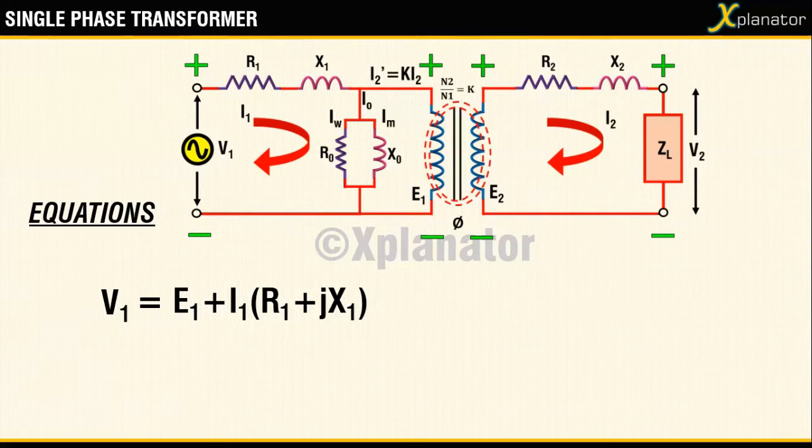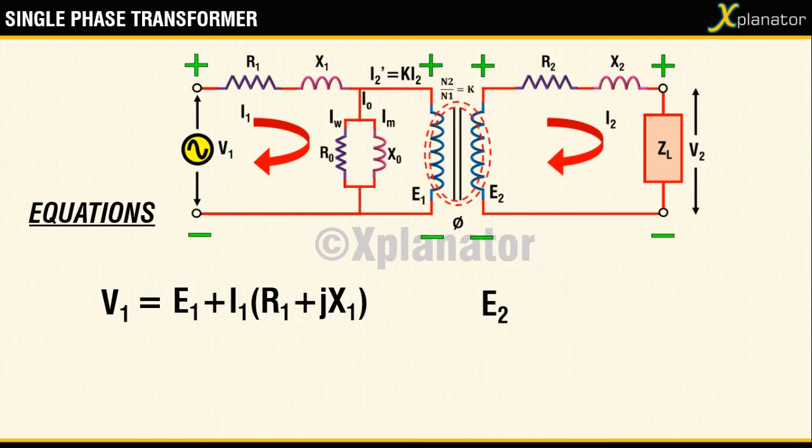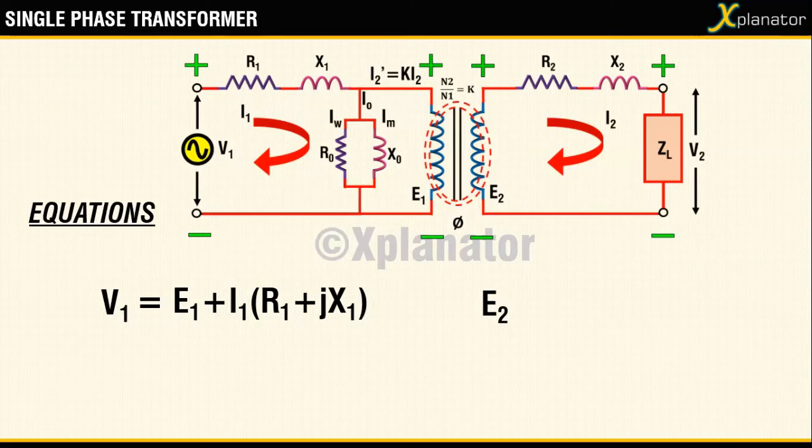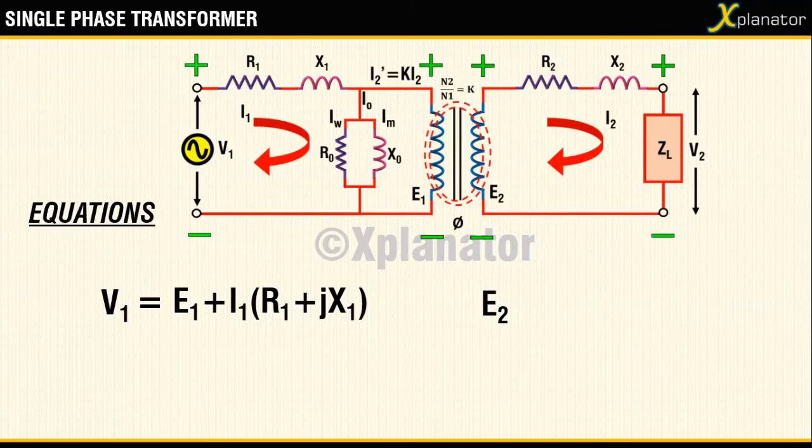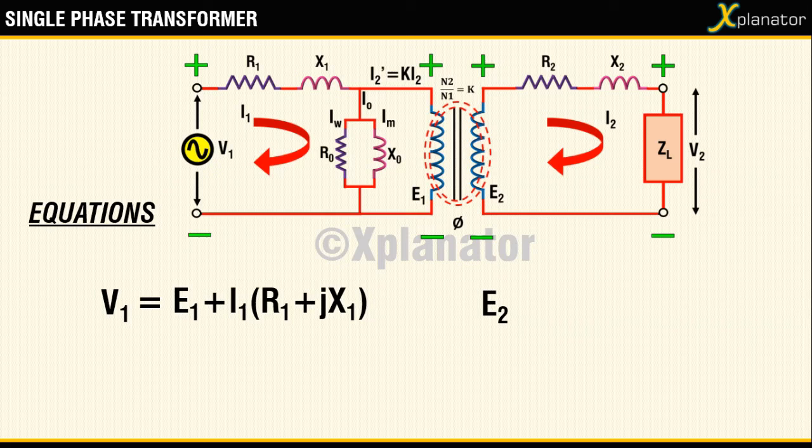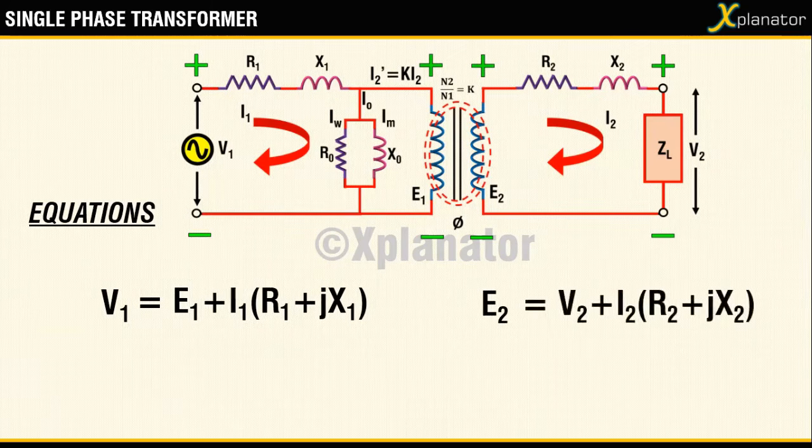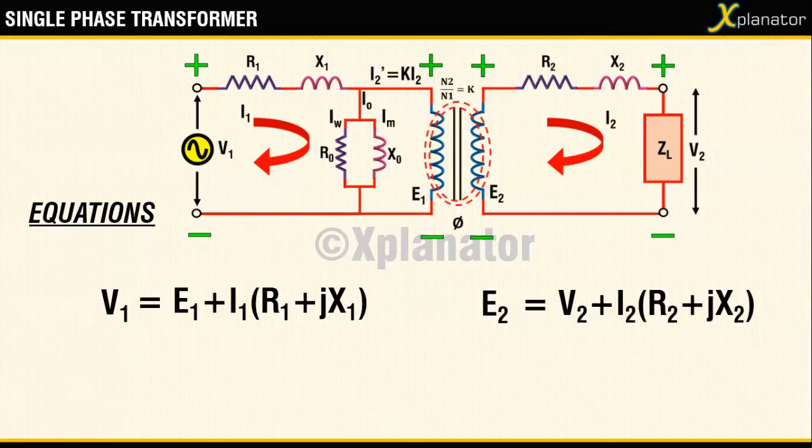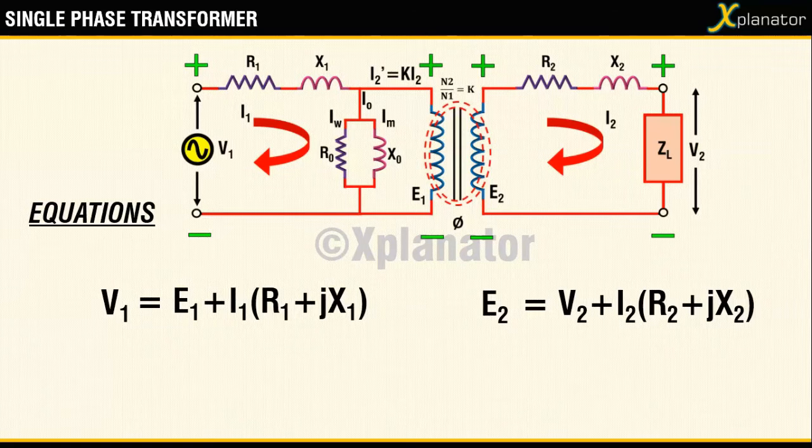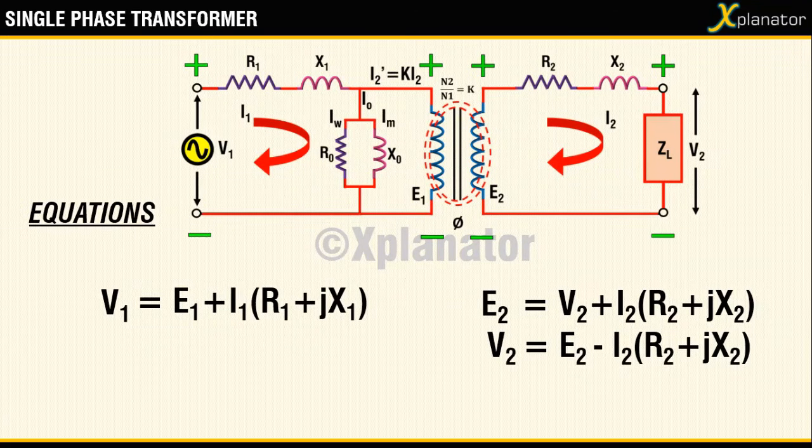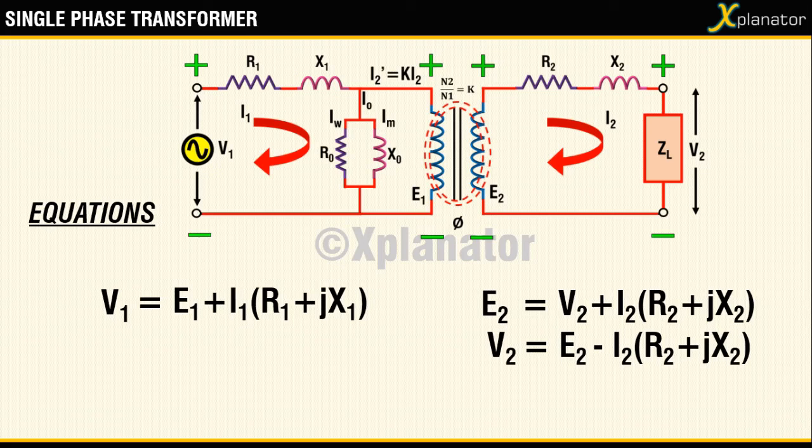For the secondary circuit E2 is the source generating the current. It has to overcome the potential drop across R2 and also V2 across the load. So the equation may be written as E2 equal to V2 plus I2 into R2 plus Jx2. If the terms are rearranged to write an equation for V2 we get V2 equal to E2 minus I2 times R2 plus Jx2.